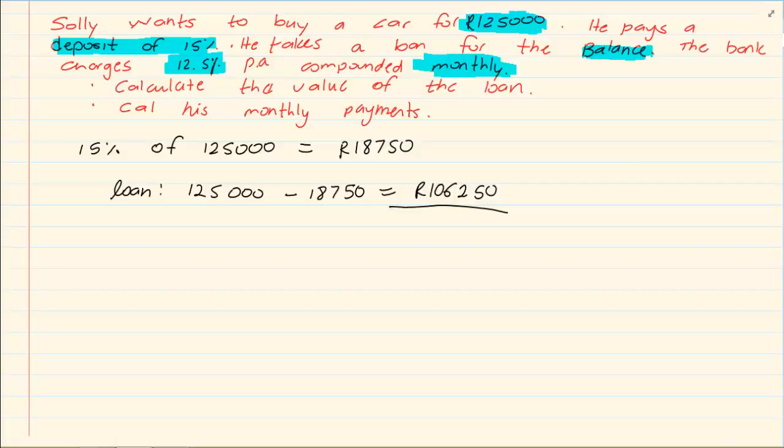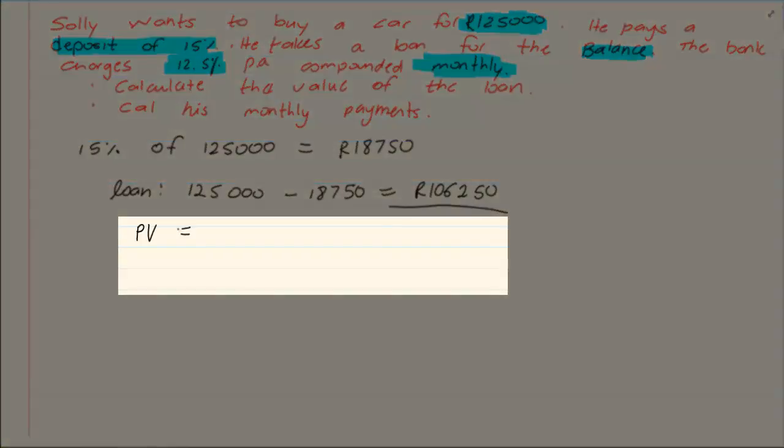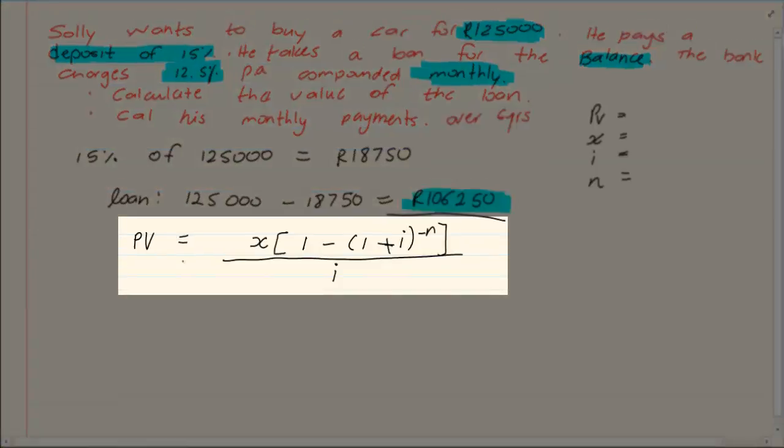A loan means I go to the bank and I am getting the money right now. Since I am getting the money now, we are going to use the present value formula. What is the present value formula? The present value is equal to x, open brackets, 1 minus, open brackets, 1 plus i, close brackets to the power of minus n, divided by i.